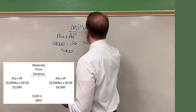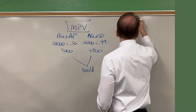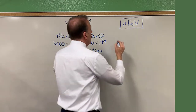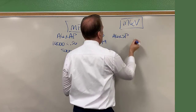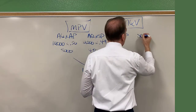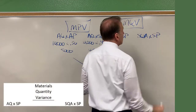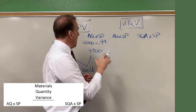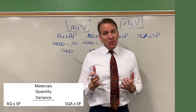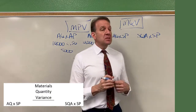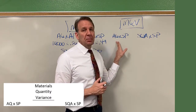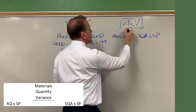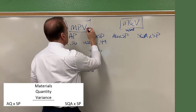So that's the materials price variance. Let's now take a look at the materials quantity variance, MQV. In this one, it's the quantity that's going to change. We're going to have actual quantity times the standard price, and compare that to the standard quantity allowed times the standard price. When doing the quantity variance, it's the actual quantity that we used — not purchased. When you're doing the price variance, it's what you purchased.